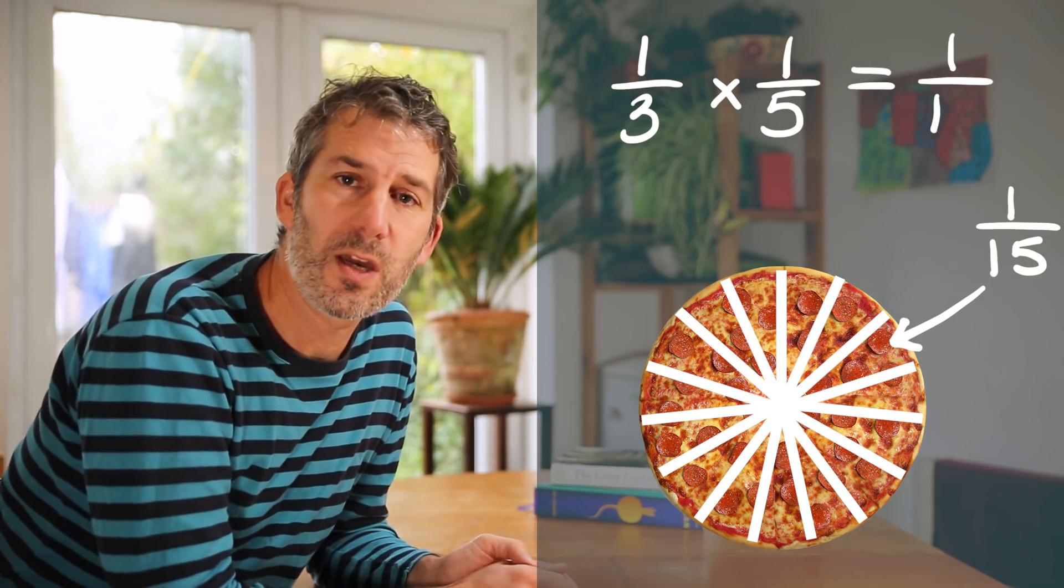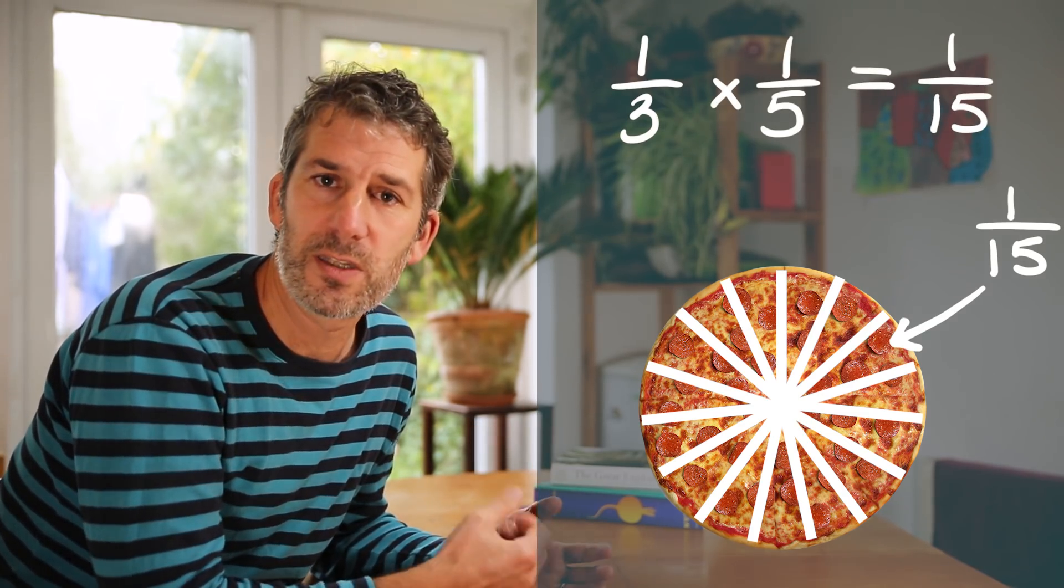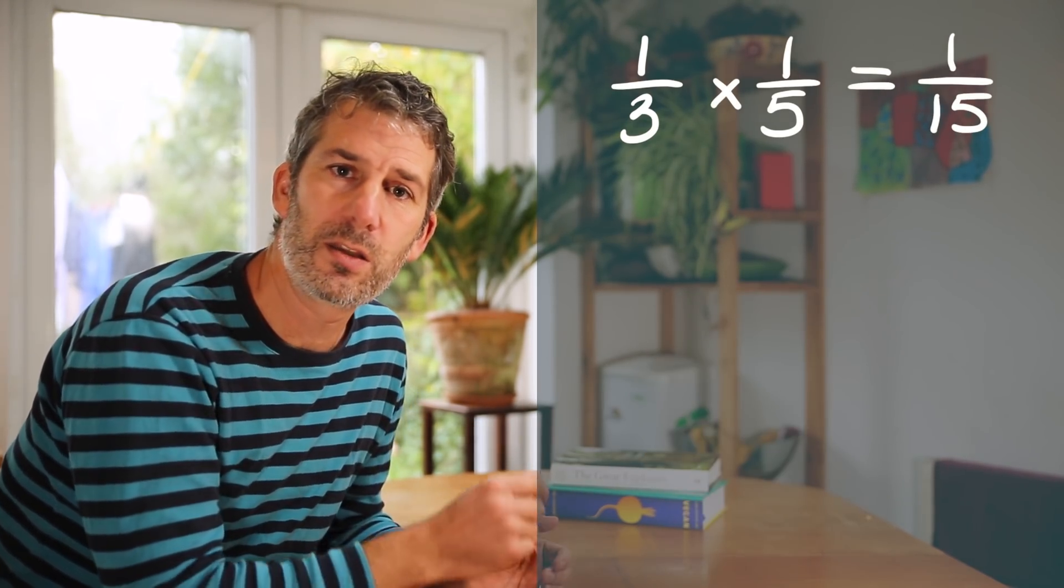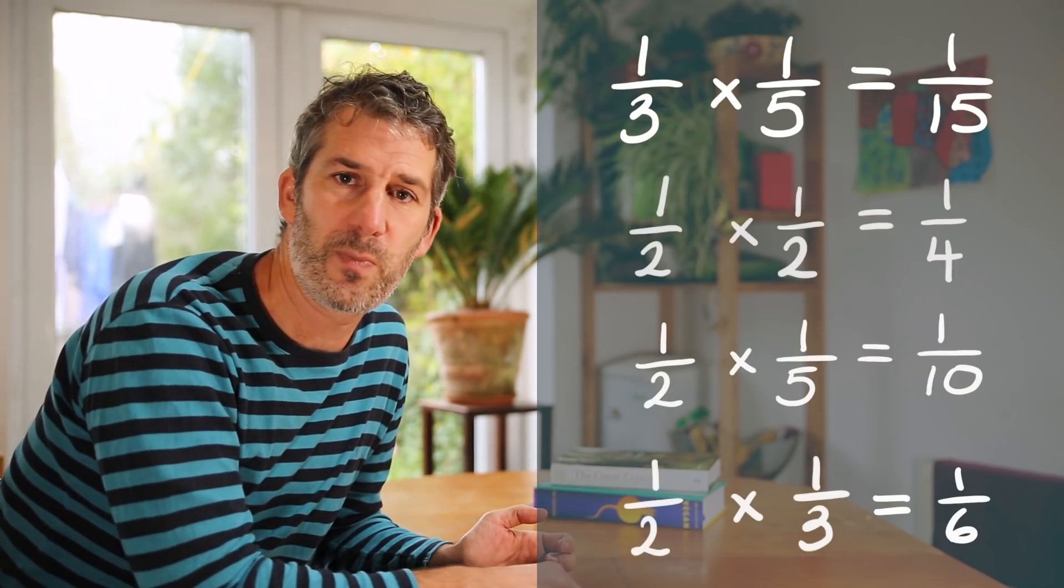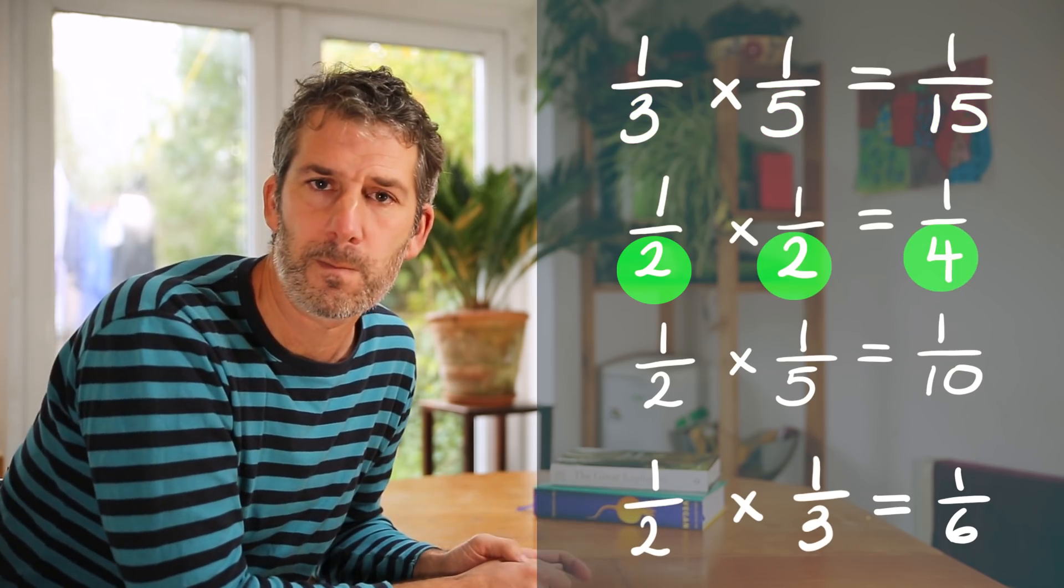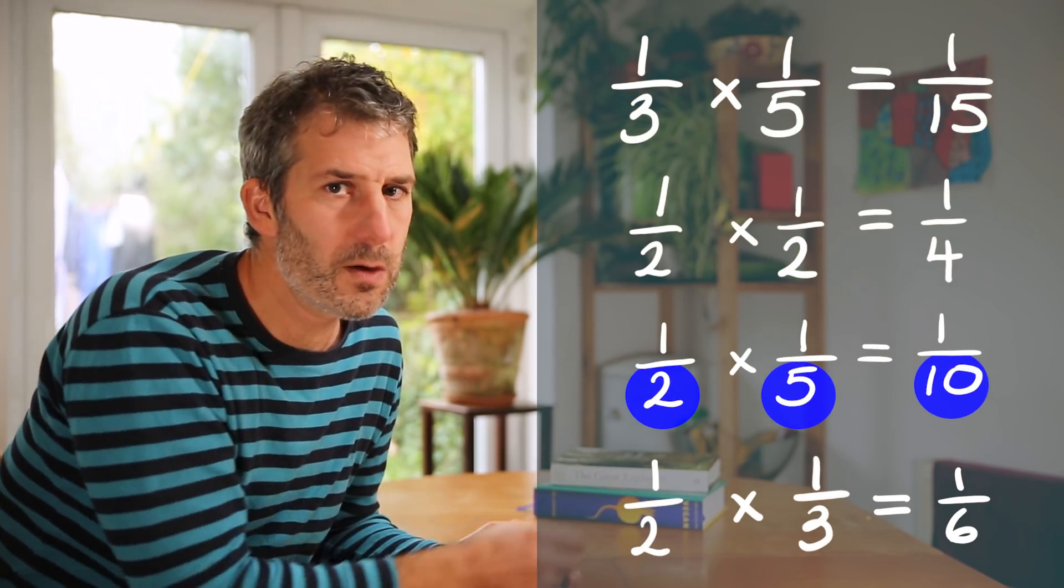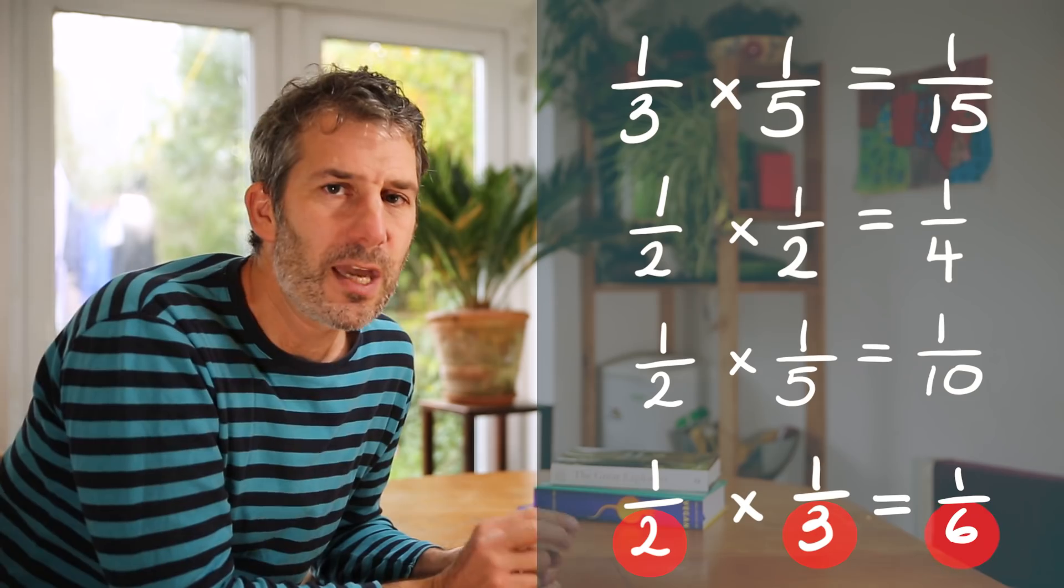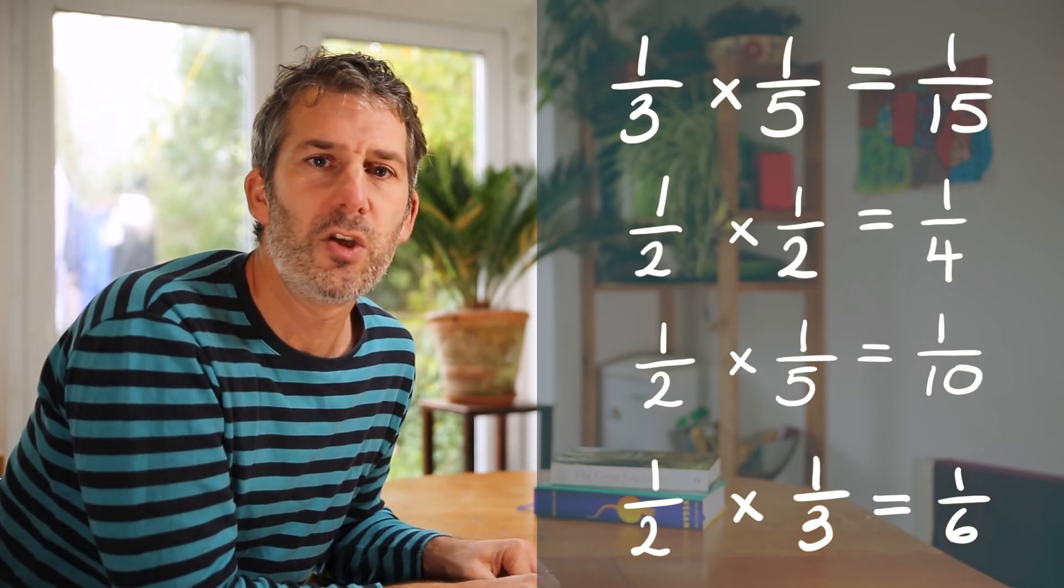If you look at all the answers we have so far you can see a pattern emerging. The denominators are simply being multiplied together. The denominator is just the number on the bottom of the fraction. What isn't obvious from those examples is that actually you also have to multiply the numerators together. Numerators are just the numbers on the top of the fraction. So let's go through a couple of examples and then I'll give you a few to practice on your own.